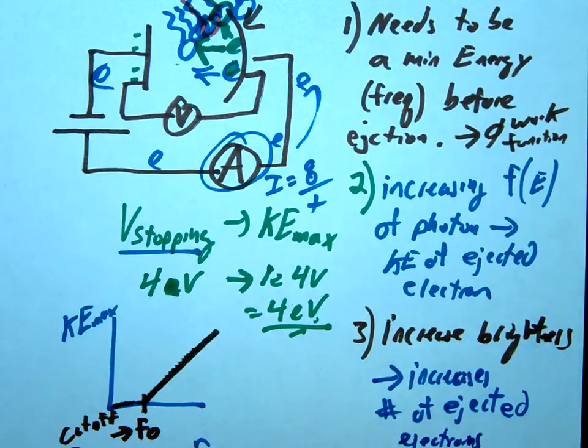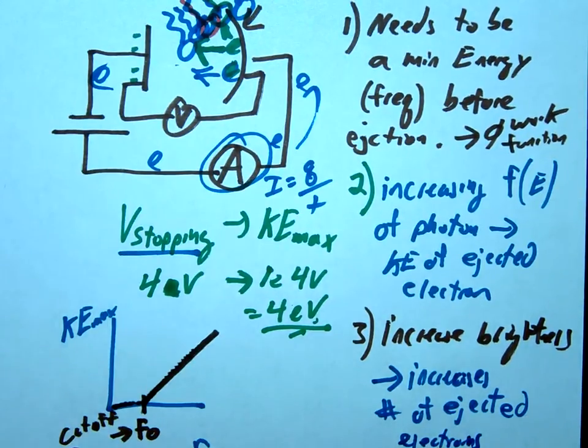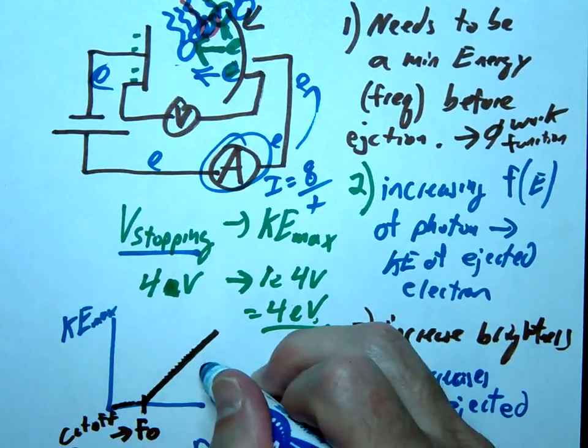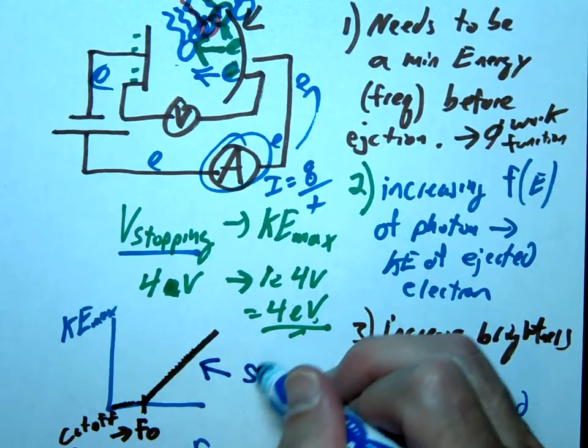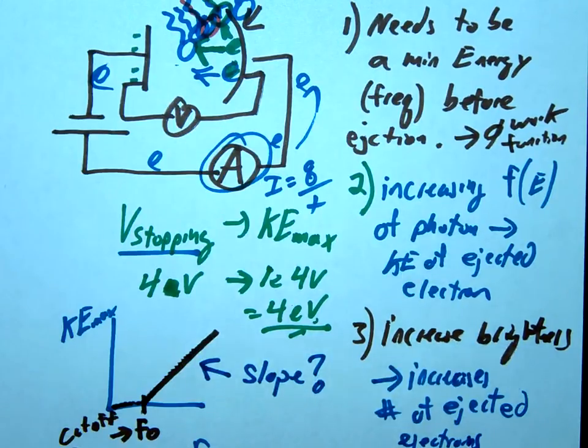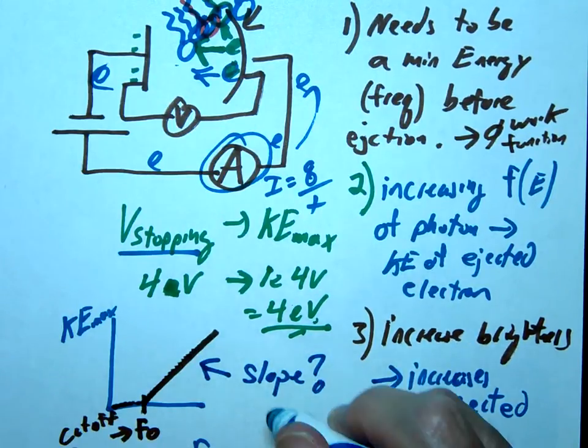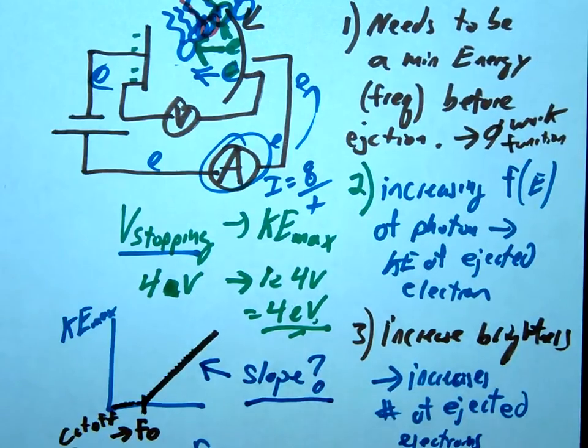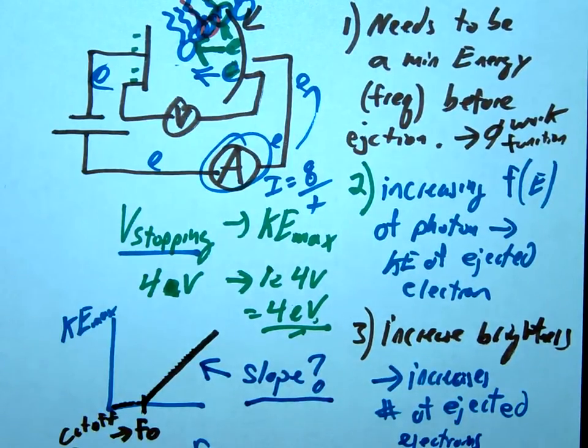So that's the experiment here. One last question, by the way, is that this slope has a physical meaning. And actually, I'm just going to leave this as a question for you. Can you figure out what is the meaning of that slope? What's the physical meaning of that slope?